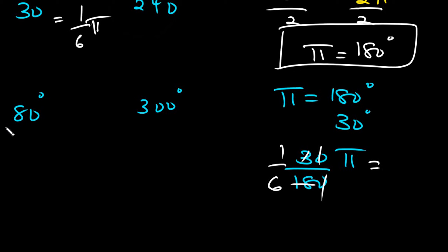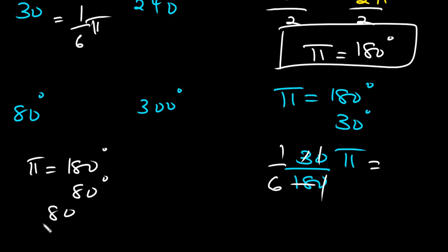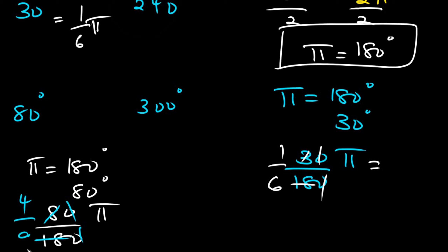Let's go to 80 degrees using the same procedure. If π radians is equal to 180 degrees, what about 80 degrees? We cross multiply, so it's going to be 80 divided by 180 times π radians. The zeros cancel, and then we simplify by dividing by 2 to get 4 over 9. So 80 degrees is the same thing as 4 over 9 π radians.